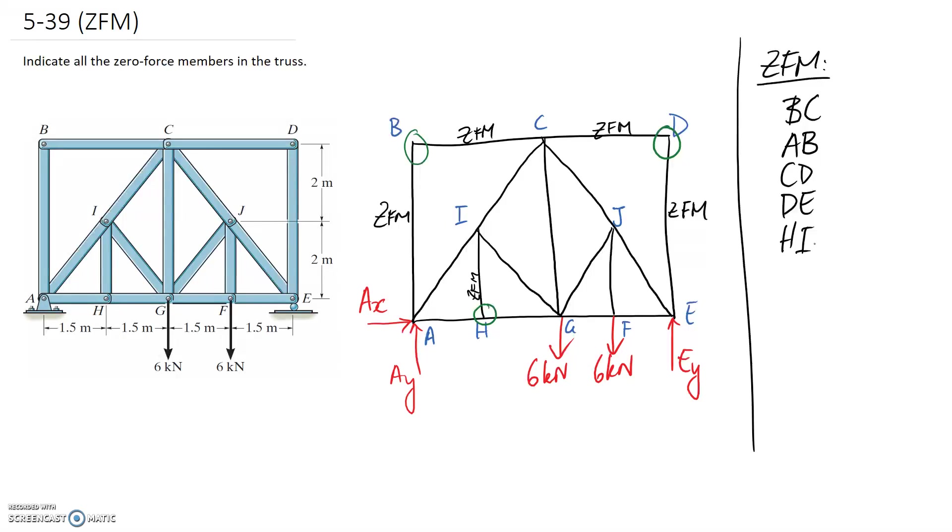Alright, so I'm not sure that there's any others that we can directly look at using this method. However, what's going to happen is this one is zero force. So if we just get rid of it for a second because it's not carrying any force and re-examine our problem, we can see that we've opened up an extra joint where we've got three coming together.